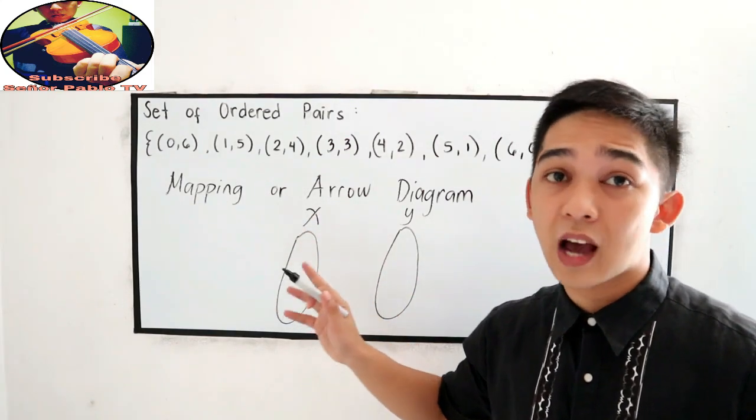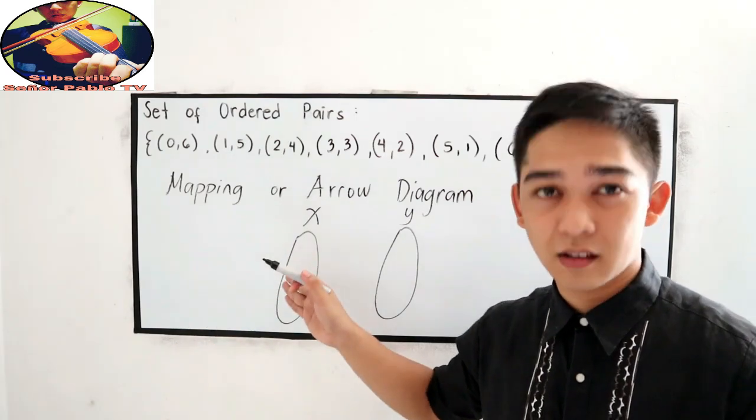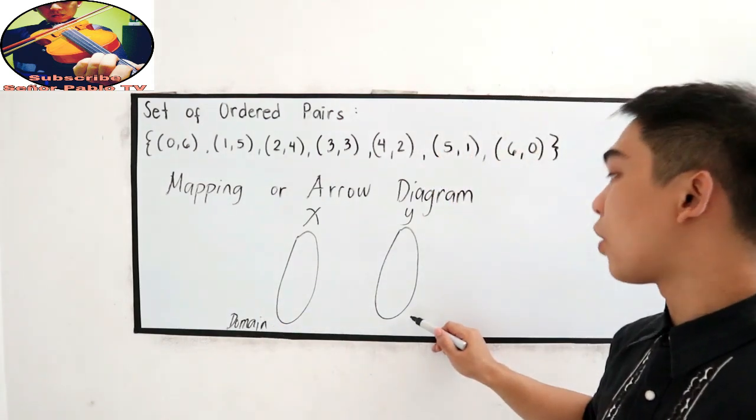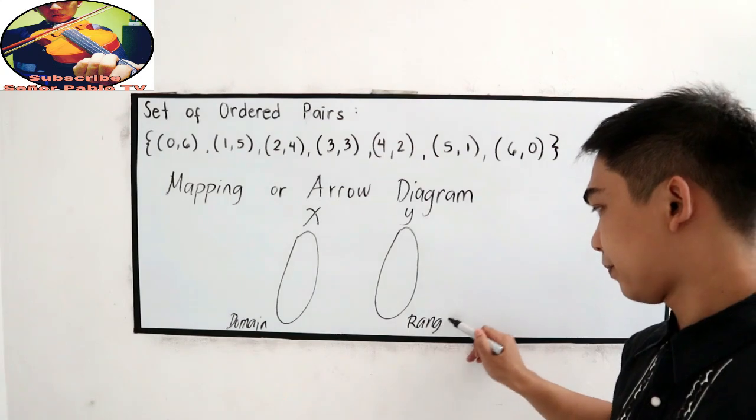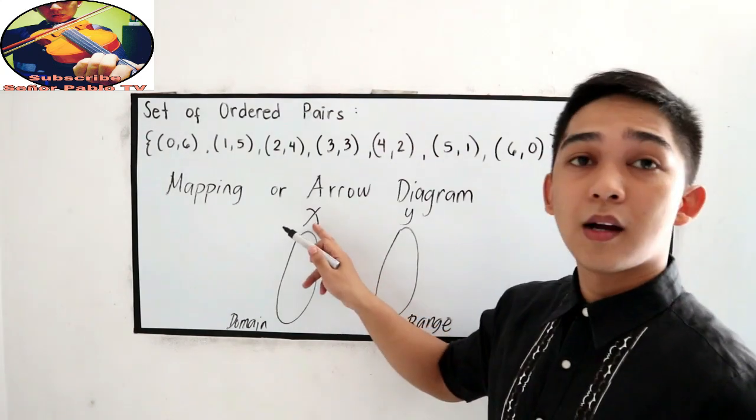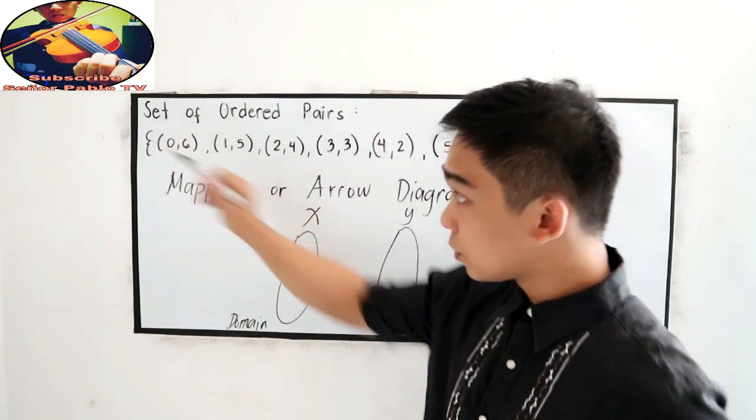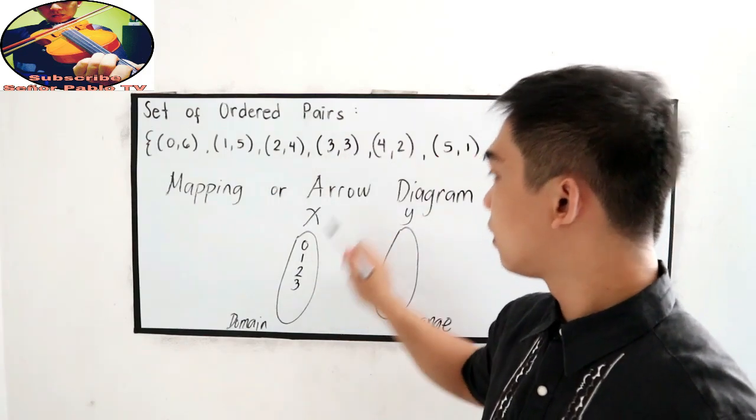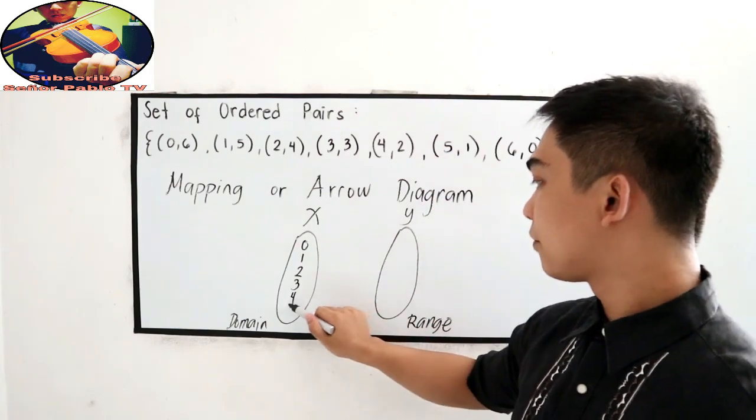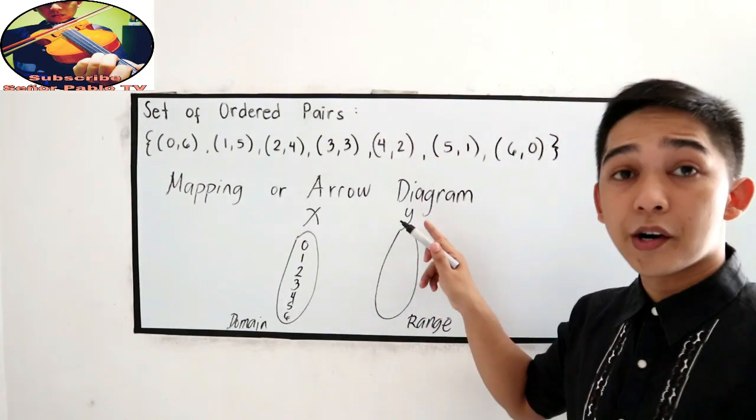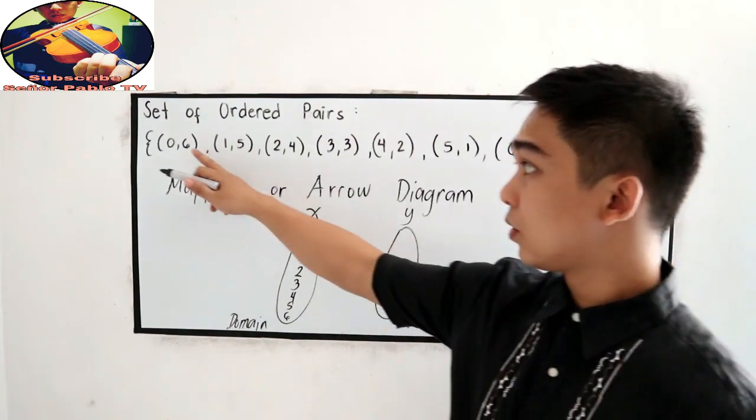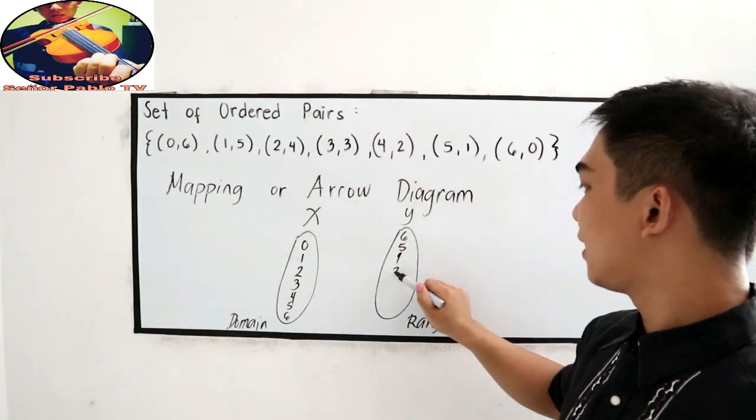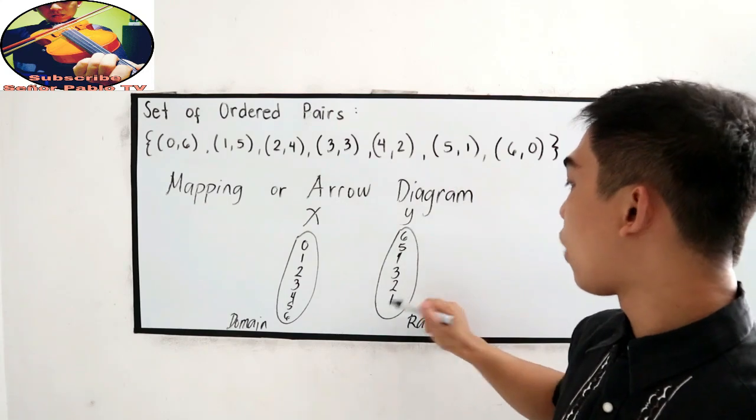We can call it as our x-coordinate and our y or the y-coordinates. Take note, our abscissa is also known as our domain or the value of the x, and y-coordinate will be our range. Now, let us write all our abscissa or our domain. So, 0, 1, 2, 3, 4, 5, and 6. And, of course, our range, we have 6, 5, 4, 3, 2, 1, and 0.